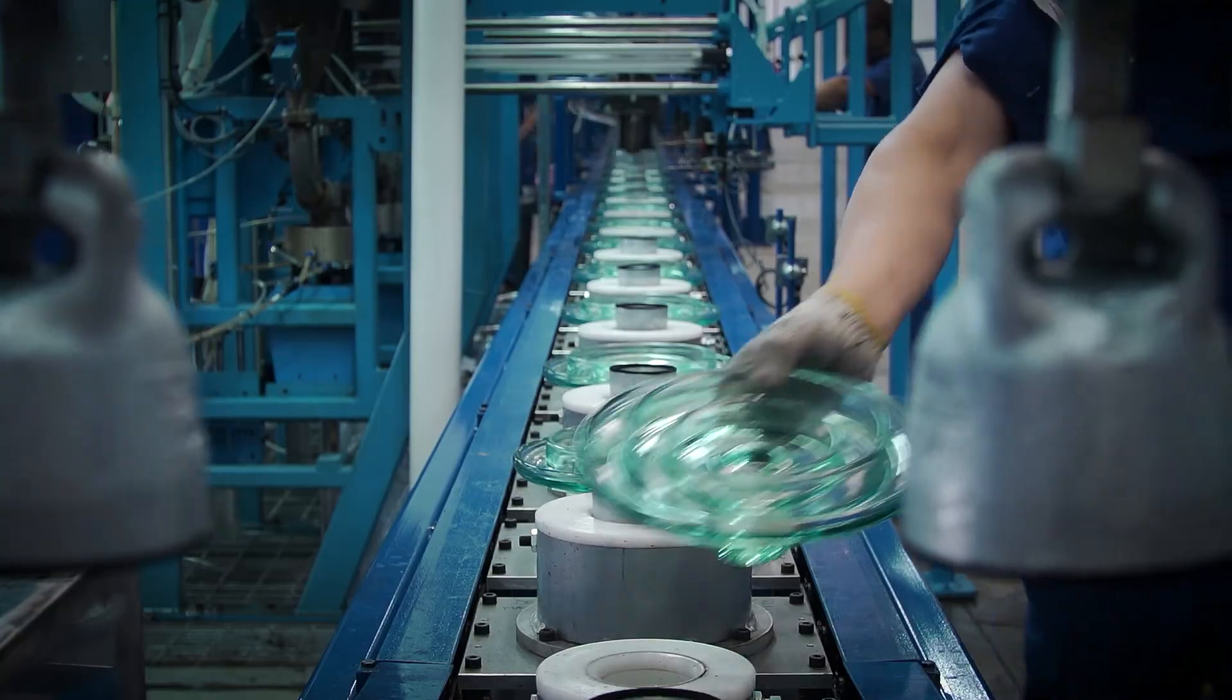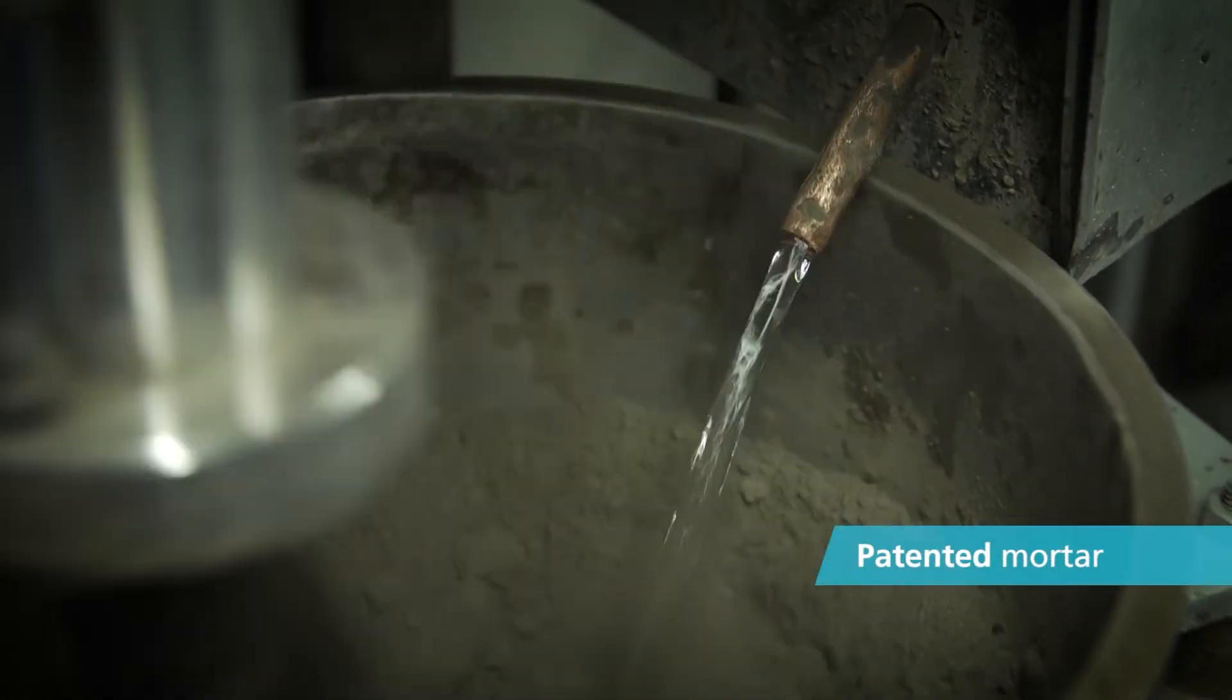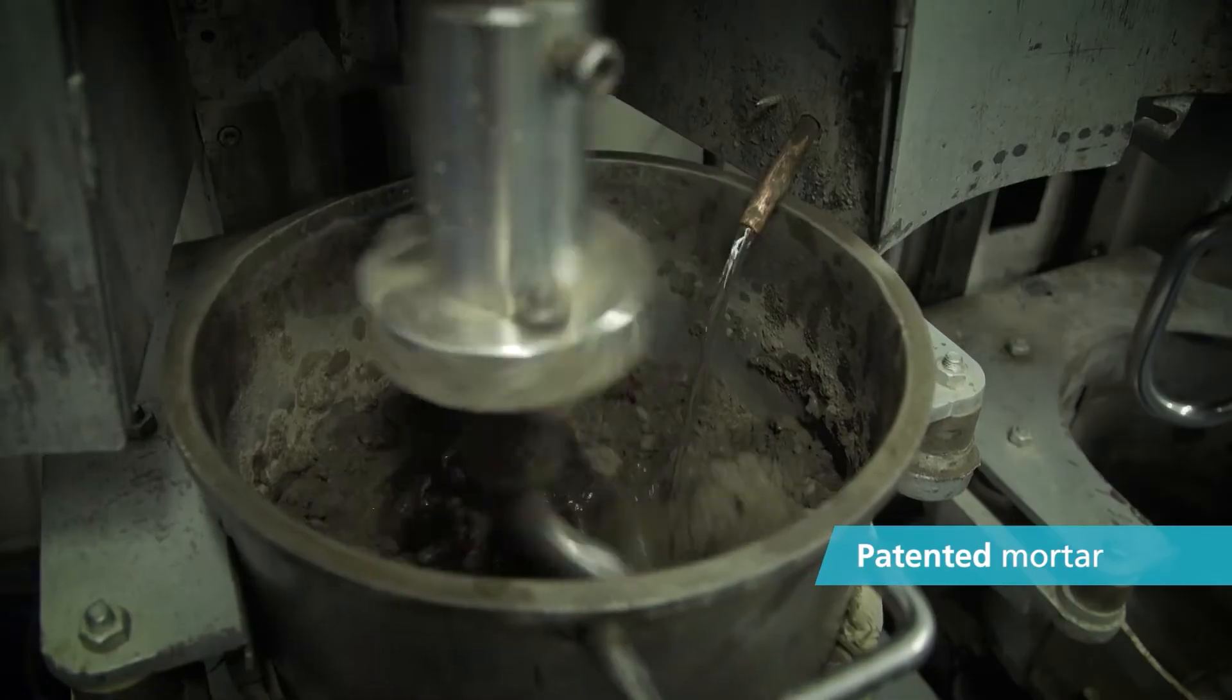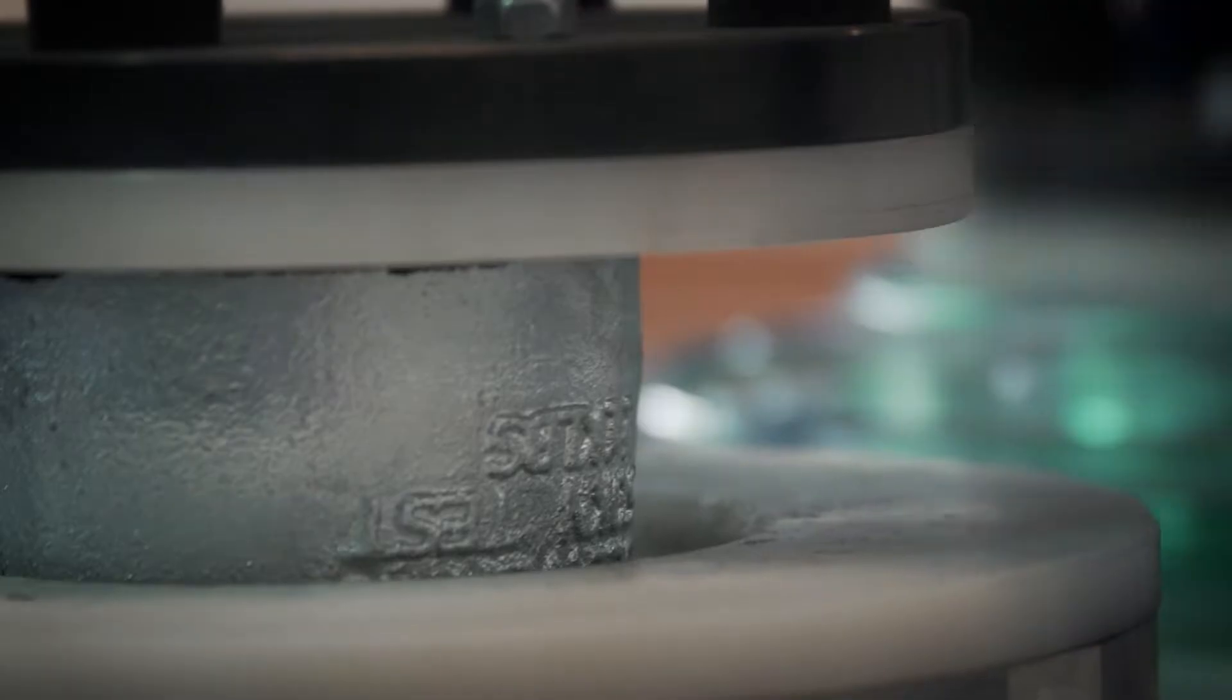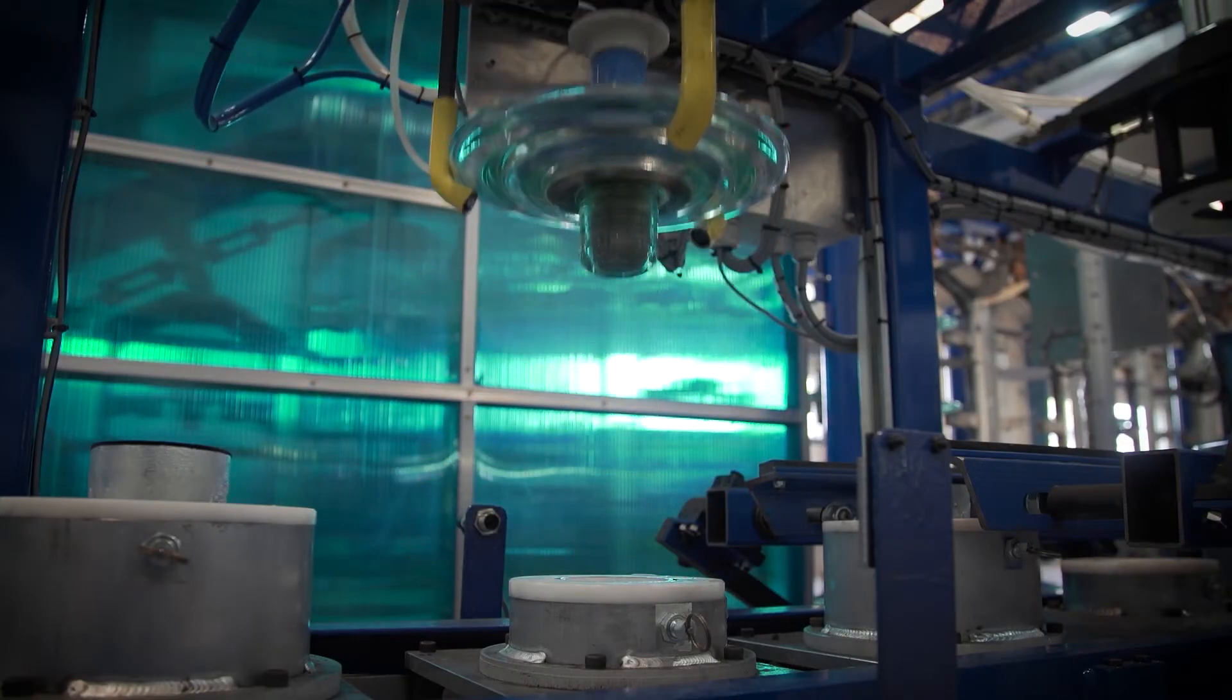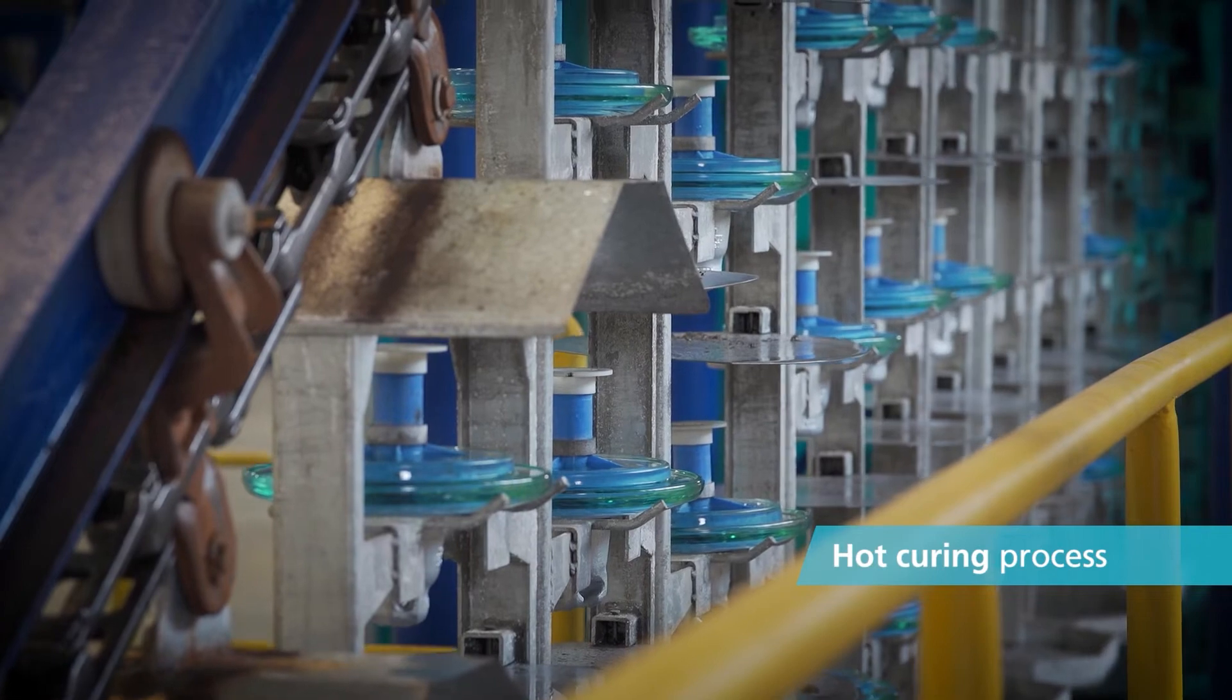Our insulators are assembled using a special type of aluminous cement that is chemically inert and immune from cement growth. The cement is processed through specific hot curing that guarantees outstanding mechanical stability over time.